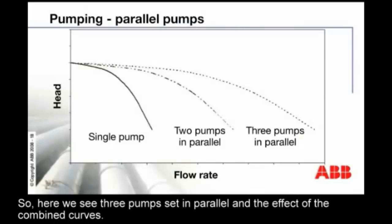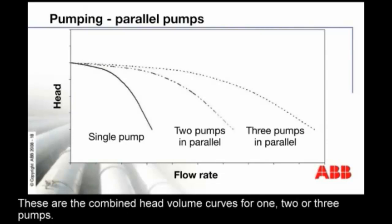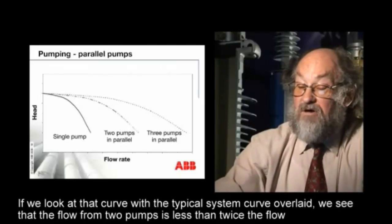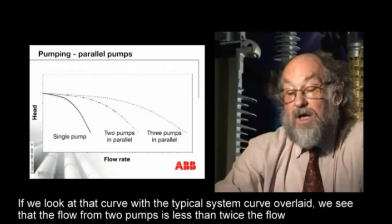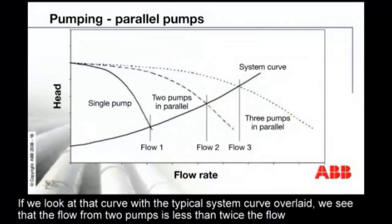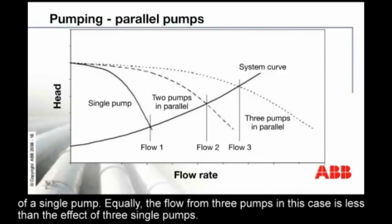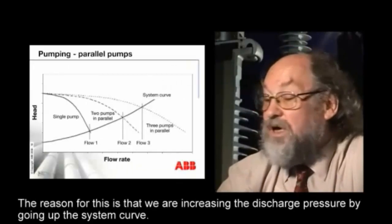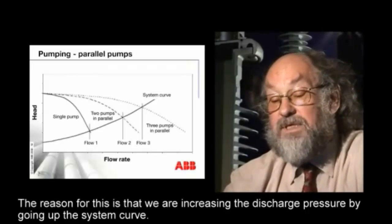Here we see three pumps set in parallel and the effect of the combined curves. These are the combined head-volume curves for one, two, or three pumps. If we look at that curve with a typical system curve overlaid, you'll see that the flow from two pumps is less than twice the flow of a single pump. Equally, the flow from three pumps is less than the effect of three single pumps. The reason for this is that we're increasing the discharge pressure — they're going up the system curve.